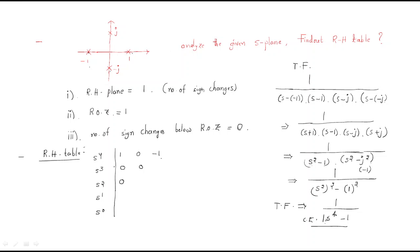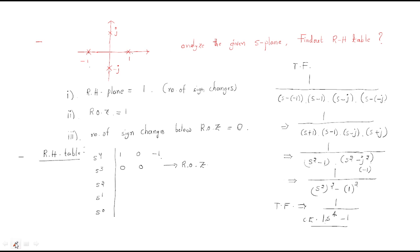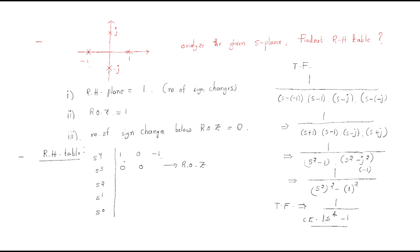Whenever we get a row of zeros in the RH table, we have a ROZ. We then go for the auxiliary equation. The auxiliary equation is formed from the row above the zero row. Here the auxiliary equation is s⁴ − 1, taken from the s⁴ row with coefficients 1 and −1.